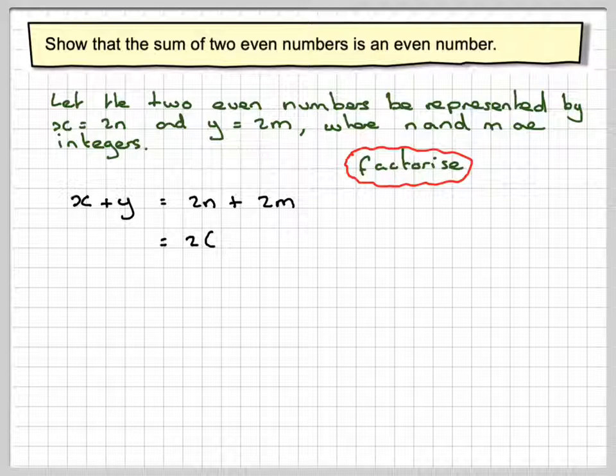To factorise, we've got 2(n + m), which is an even number.